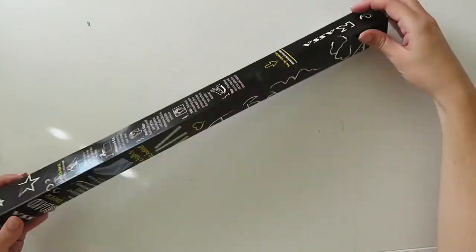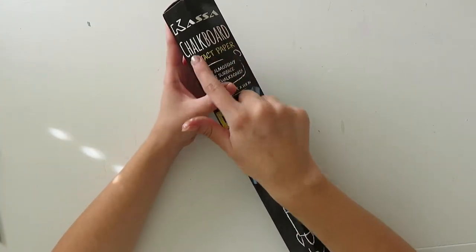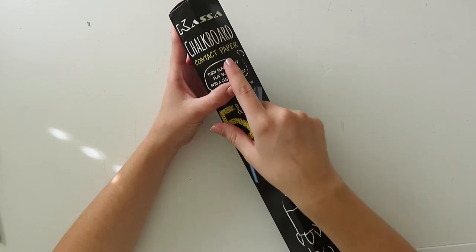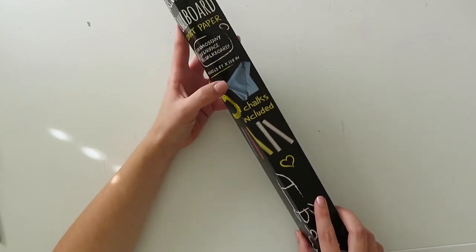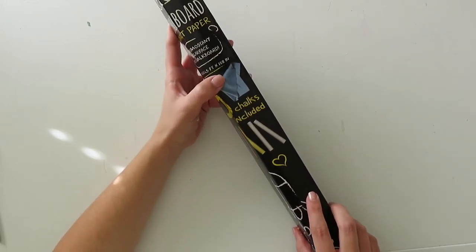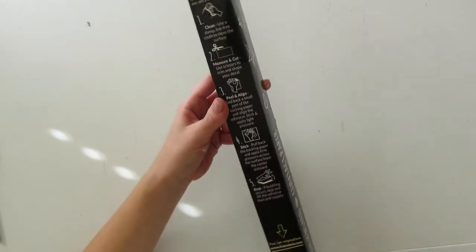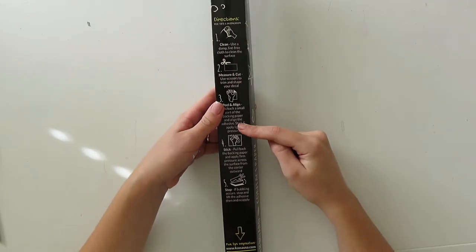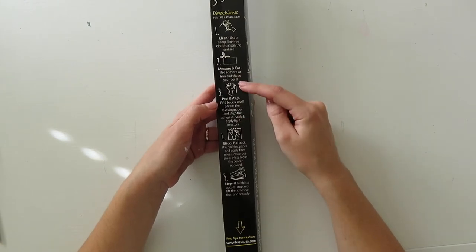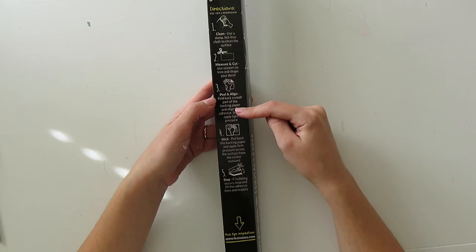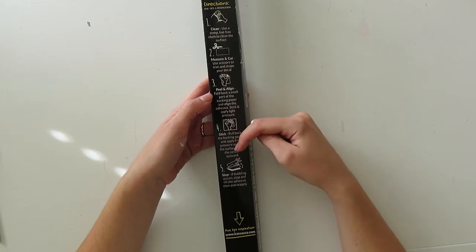So the next step is going to be applying this Casa chalkboard contact paper to the glass that came out of the frame. So I'm really intrigued by this idea because I think it's really neat that Casa sells a roll of chalkboard contact paper, which means you could basically apply contact paper to any almost any flat surface and you can get an instant chalkboard. So on the back of the box, it kind of tells what you need to do. You need to clean it, you can measure and cut, peel and align, stick and then you start using it like a chalkboard and it's pretty cool.